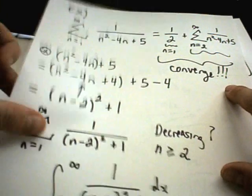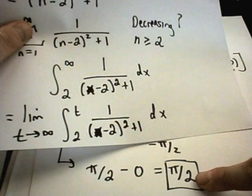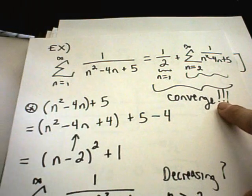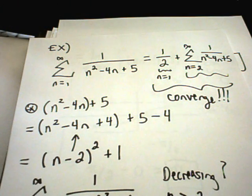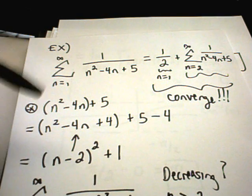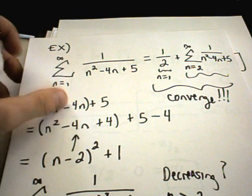So don't fall into the trap of saying, well, the improper integral goes to pi over 2. The original series must also go to pi over 2 because, again, that's just simply not correct. The only thing we can conclude is if the improper integral converges or diverges, the original series also converges or diverges.